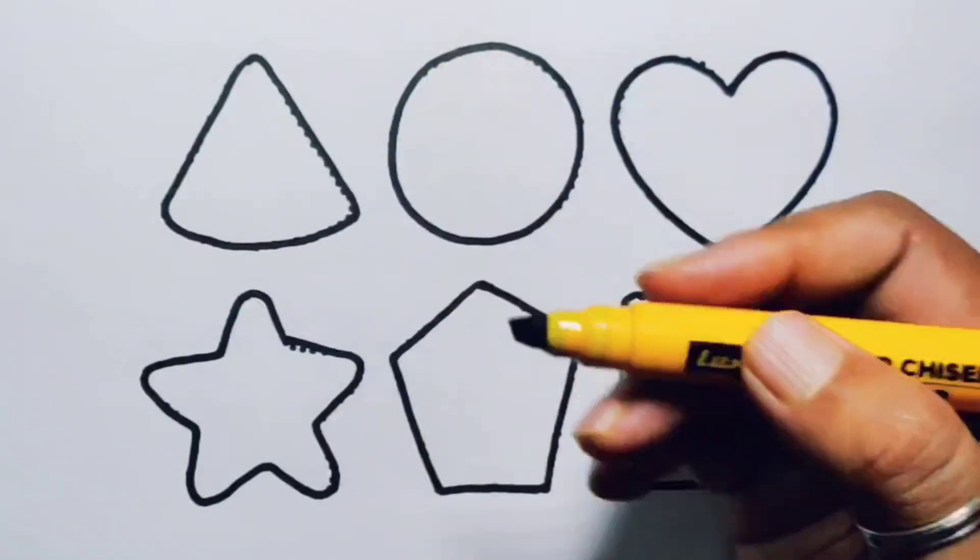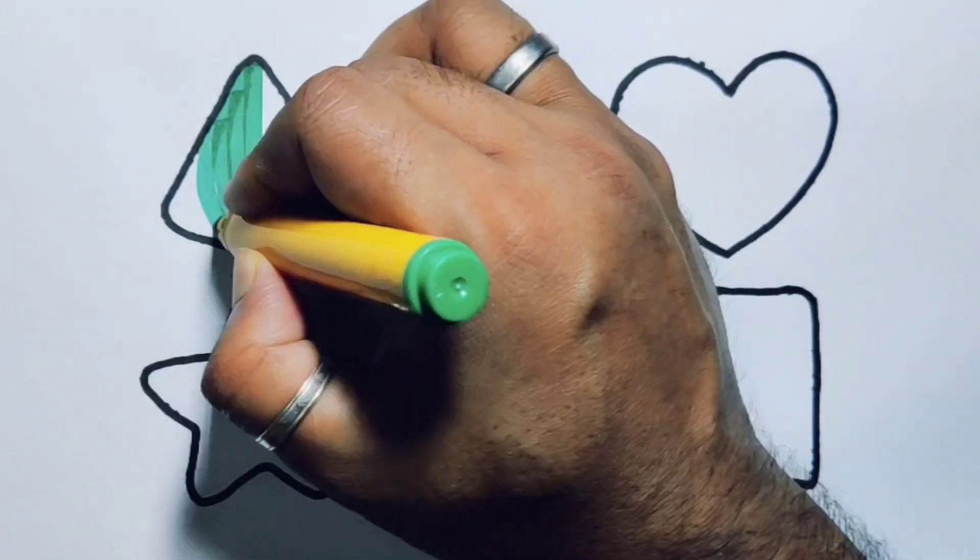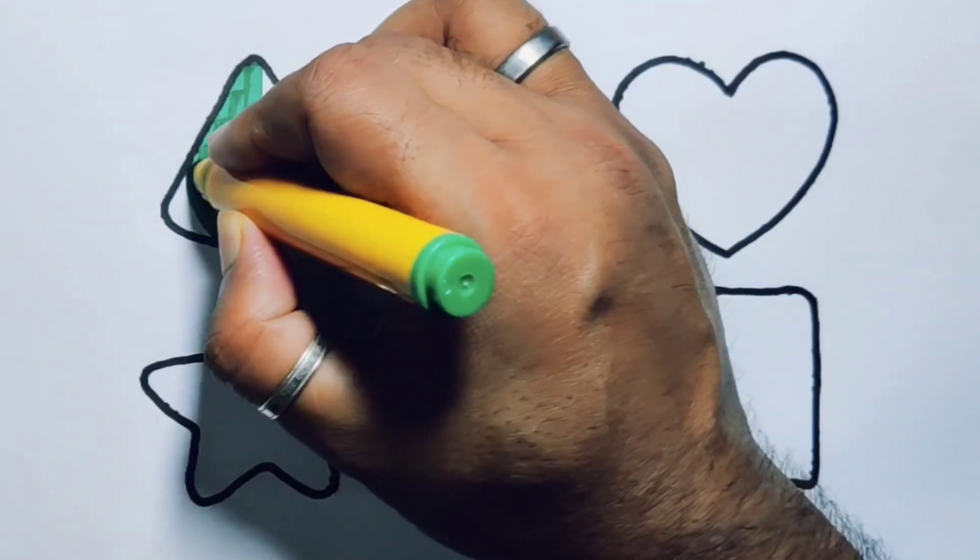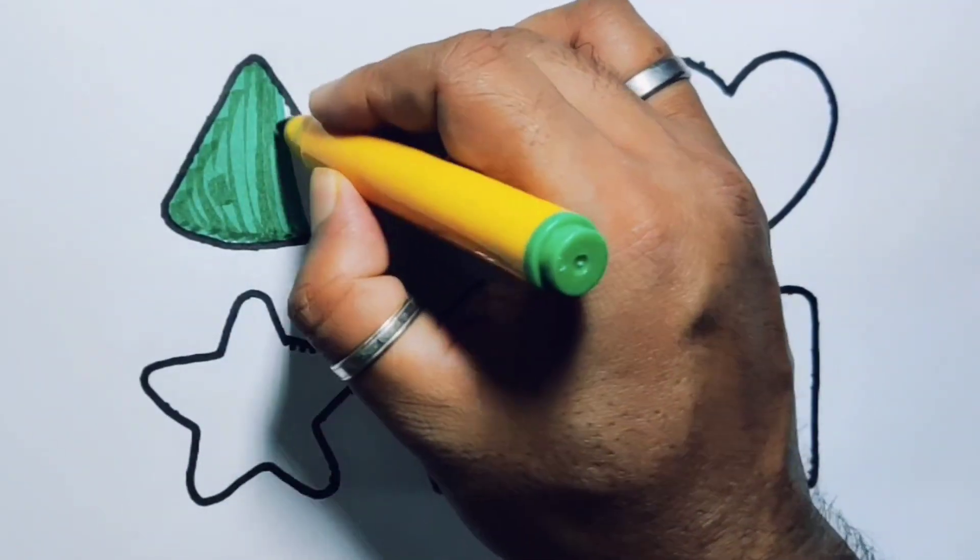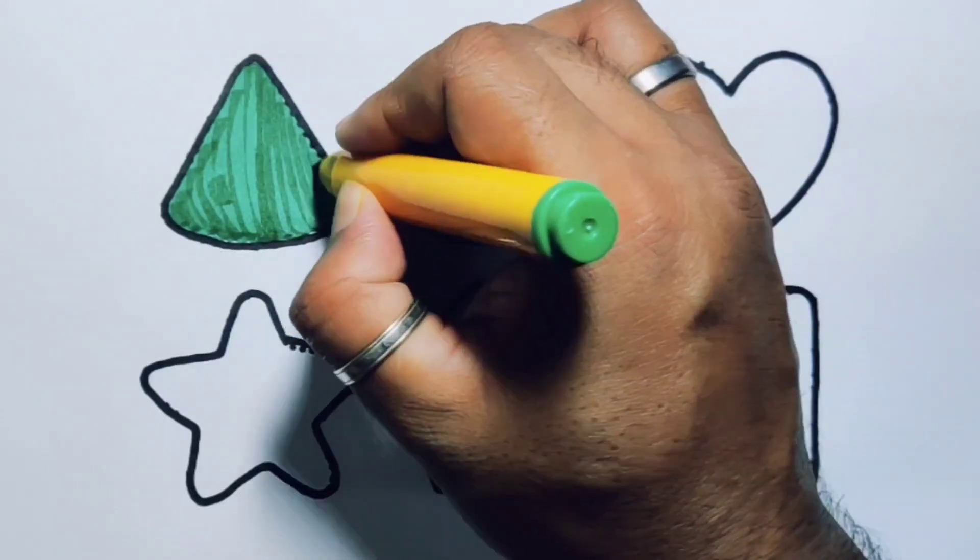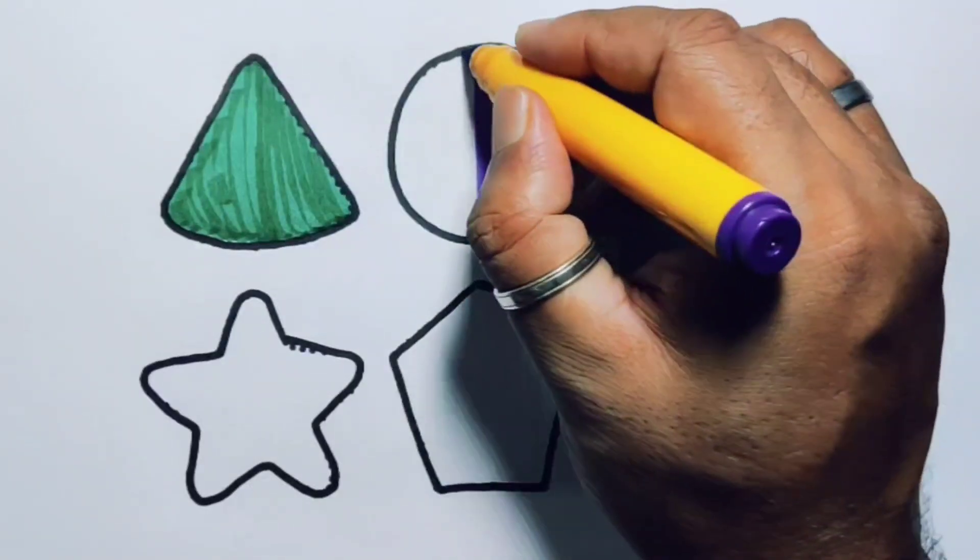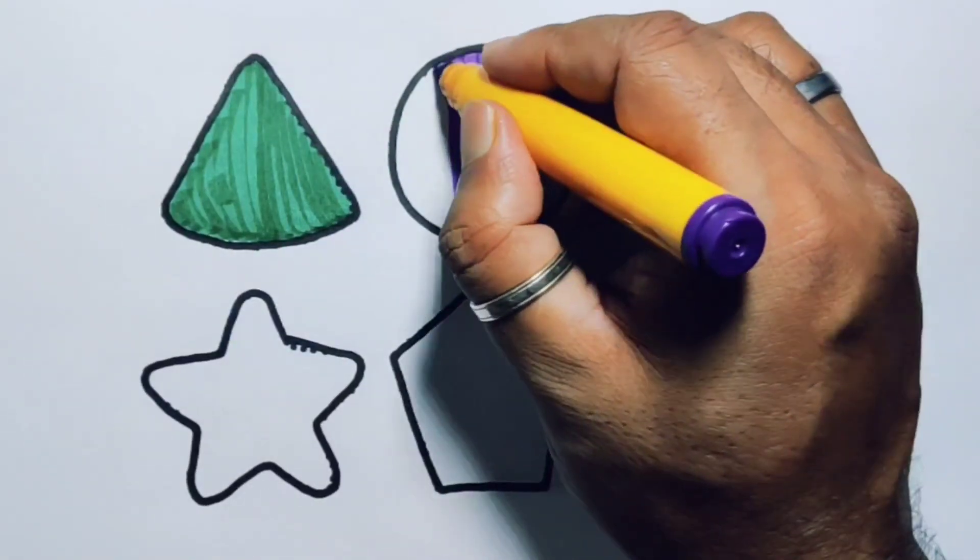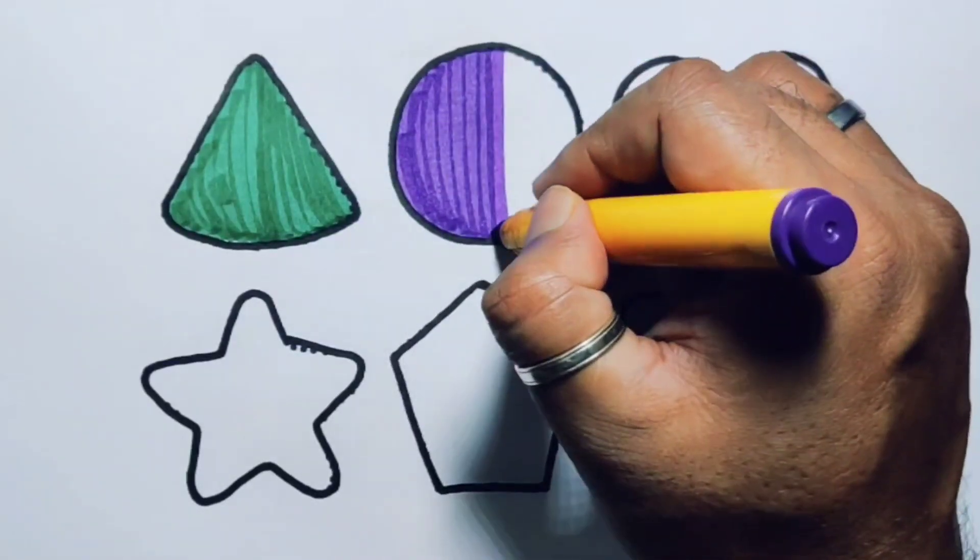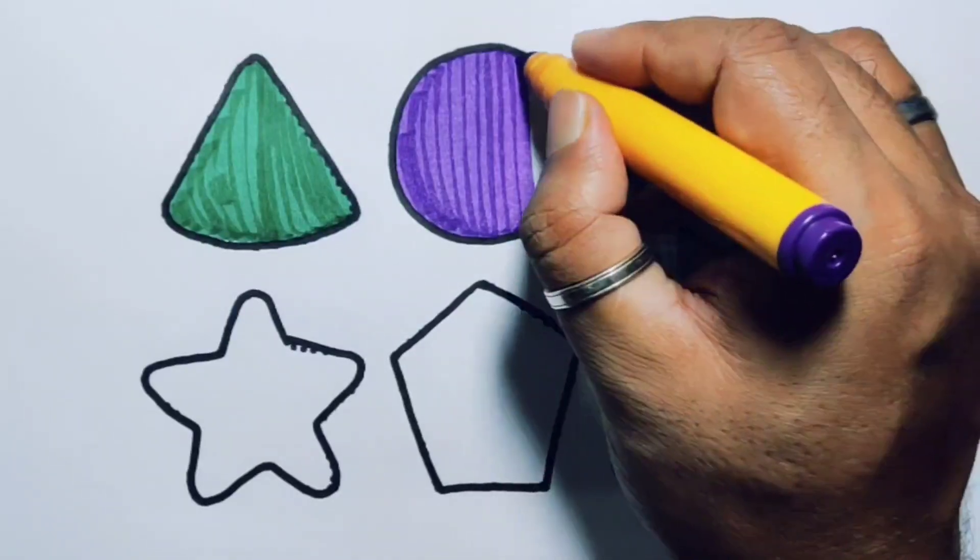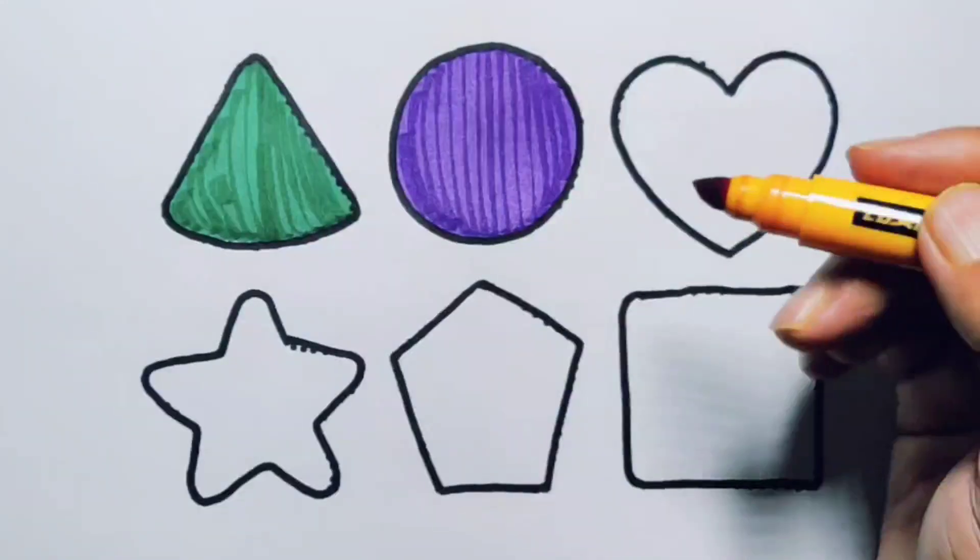Now we're going to put the color. Green color triangle. Purple color circle. Red color